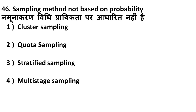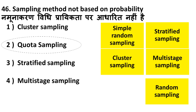Next question: which sampling method is NOT based on probability? The probability-based methods are simple random sampling, stratified sampling, cluster sampling, multi-stage sampling, and random sampling. The one which is not based on probability is quota sampling — it is a non-probability sampling method. The correct answer is quota sampling.